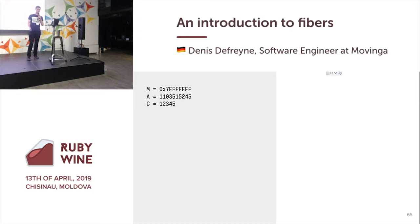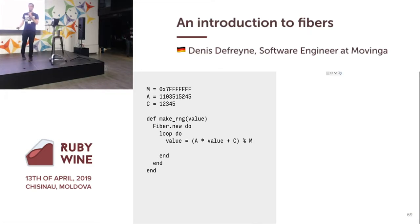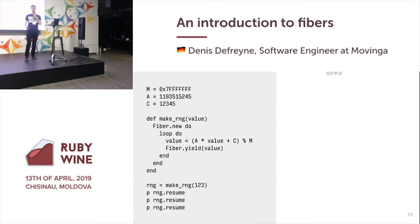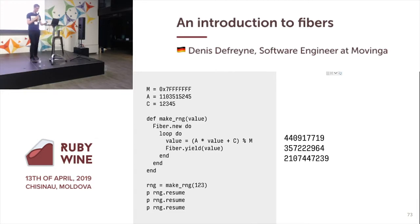I'll define my magic constants. I'll have a function make_random_number_generator with a seed value, which will return a new Fiber. In that Fiber I will loop, calculate the next value based on the current value and constants m, a, and c, then yield that value using Fiber.yield. Every time I call resume, it will print another random number.